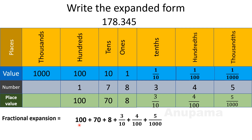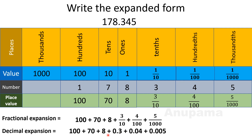We can also write decimal expansion. Since 100, 70, and 8 are whole numbers, we write them as they are. And since fractions can be expressed as decimals: 3/10 = 0.3, 4/100 = 0.04, and 5/1000 = 0.005. So the decimal expansion is: 100 + 70 + 8 + 0.3 + 0.04 + 0.005. You can write the expanded form in either fraction form or decimal form — it is up to you. My dear students, if you face any problem in mathematics, just do practice and you can solve any problem. Goodbye.